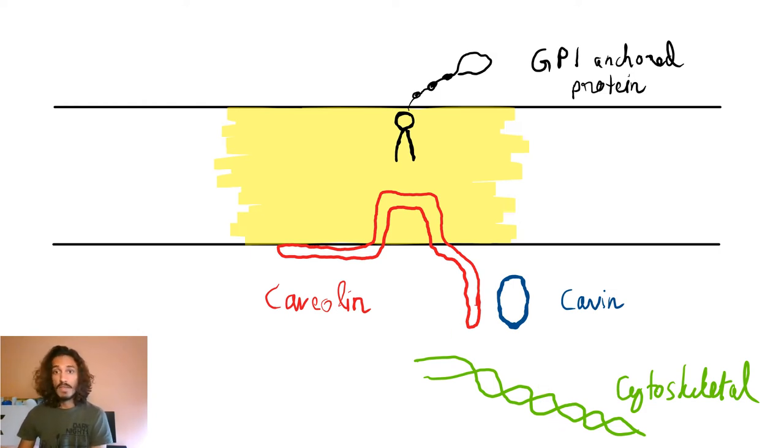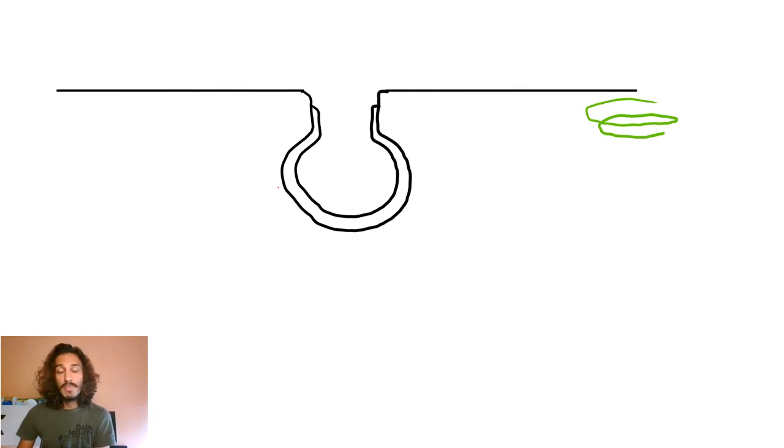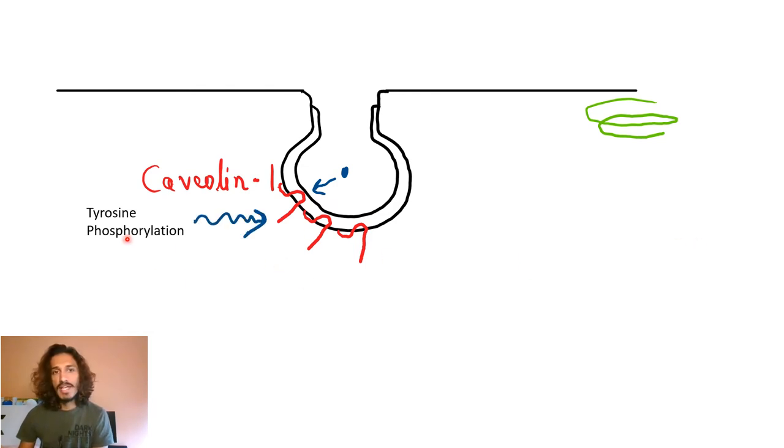What happens is when a ligand binds to this, that will result in a whole cellular activation mechanism, because of which ultimately the final thing that happens is a tyrosine phosphorylation of your caveolin. That will start off the whole process of this budding and going in, and your dynamin gets activated. This is your dynamin 2.